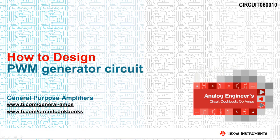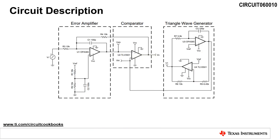Hello. Welcome to our short video on how to design a PWM generator circuit. This schematic represents a pulse width modulator, or PWM, generator circuit. The circuit is composed of three blocks: an error amplifier, a comparator, and a triangle wave generator.